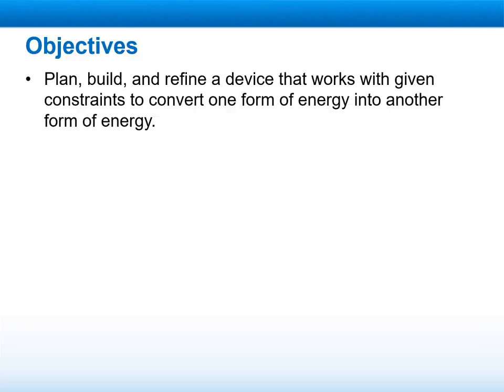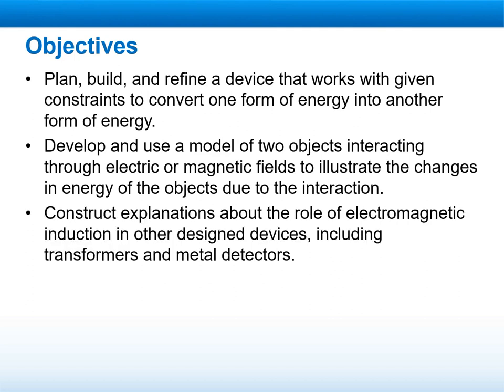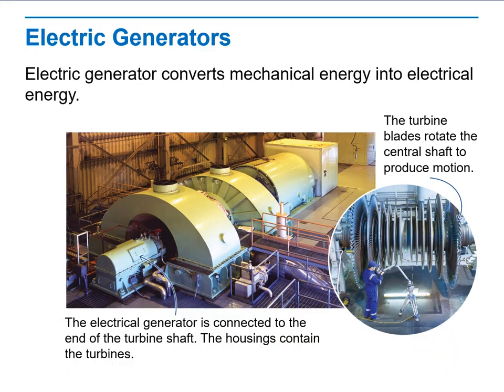The objectives of this lesson are: plan, build, and refine a device that works with the given constraints to convert one form of energy into another form of energy; to develop and use a model of two objects interacting through electric or magnetic field to illustrate the changes in energy of the object due to the interaction; construct an explanation about the role of electromagnetic induction in other design devices, including transformers and metal detectors.